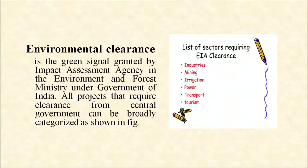EIA assesses the environmental health and social implications of planned developmental processes — it links environment with development. The goal of EIA is to ensure environmentally safe and sustainable development. Environmental clearance is a green signal granted by the Impact Assessment Agency in the Ministry of Environment and Forest, Government of India. All projects requiring central government clearance include river valley projects, nuclear power projects, infrastructure and CRZ, mining, thermal power plants, tourism, transport, and irrigation projects.